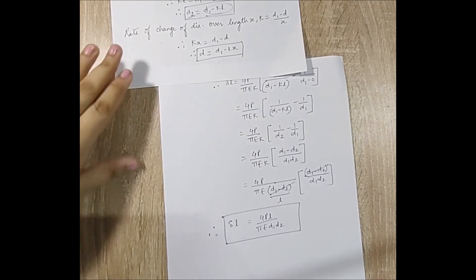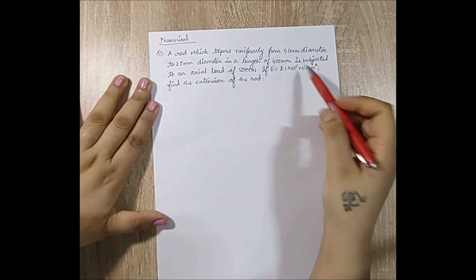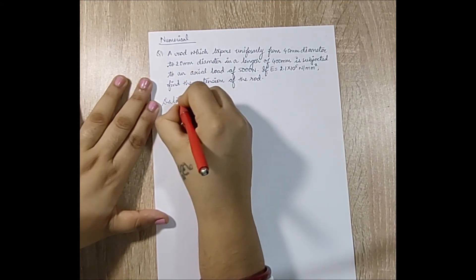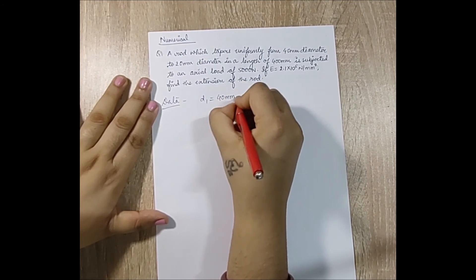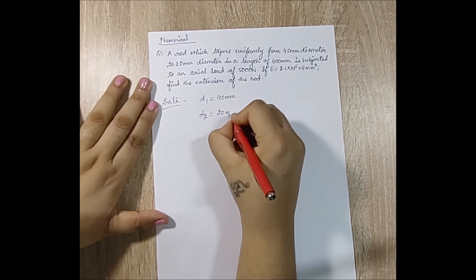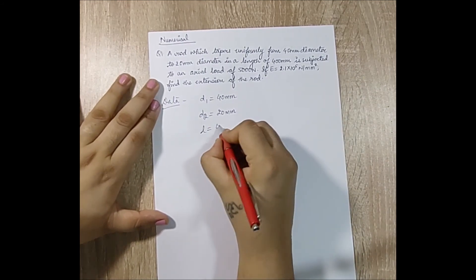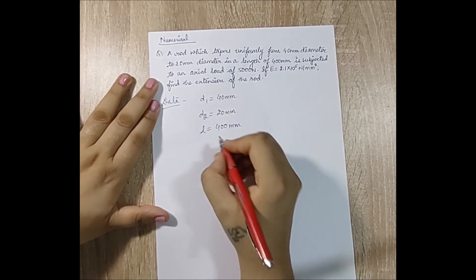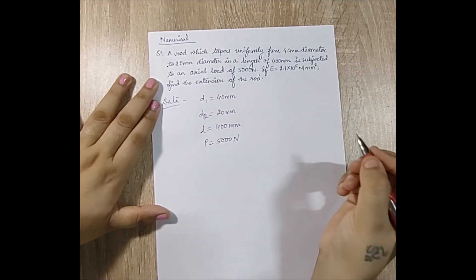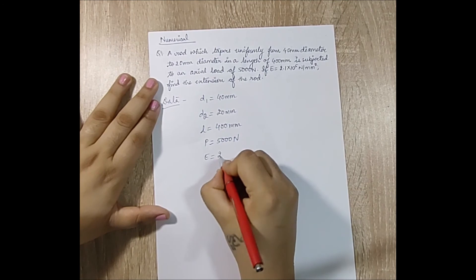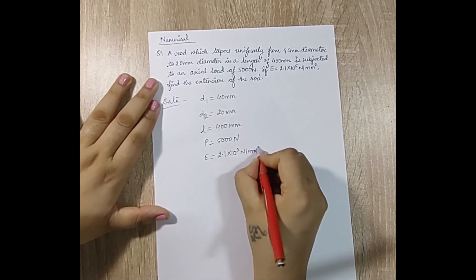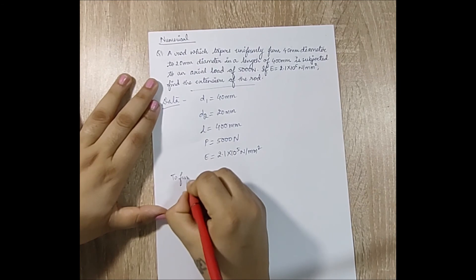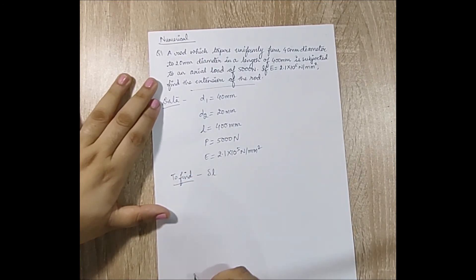Now let's apply this formula to a numerical example. A rod tapers uniformly from 40 mm diameter to 20 mm diameter over a length of 400 mm, and is subjected to an axial load of 5000 N. Given E = 2.1 × 10⁵ N/mm², find the extension of the rod.